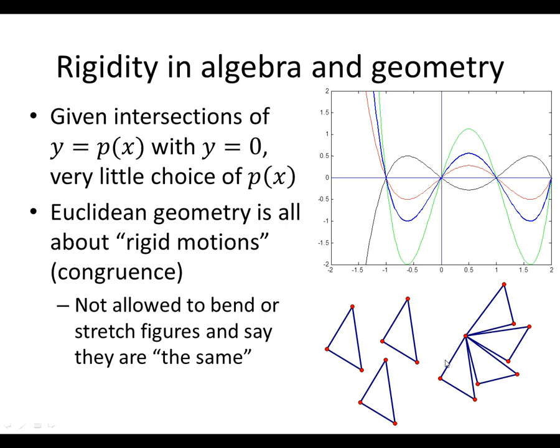I want to talk about rigidity, which contrasts with topology and flexibility. Here's a couple of facts about rigidity. Suppose I have y equals p of x, and I want to look at all the different ways I could create a curve where y is a polynomial function of x, and see how that intersects with y equals zero. I started with a polynomial and found the intersections. What if you do that backwards? Suppose I want the intersections to be right here, here, here, and here, at x equals minus one, zero, one, and two. I want to create that as the intersection of a curve y equals p of x with y equals zero.